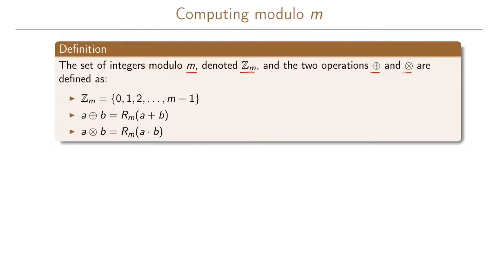The set of integers modulo M, which we denote by Z sub M, and the two operations addition and multiplication, they are defined as: Z_M is the set of all the integers from zero up to M minus one. Then addition modulo M is defined as A plus B equals the remainder when A plus B is divided by M. And similarly for multiplication, we say that A times B, multiplication modulo M, is the remainder when A times B is divided by M.